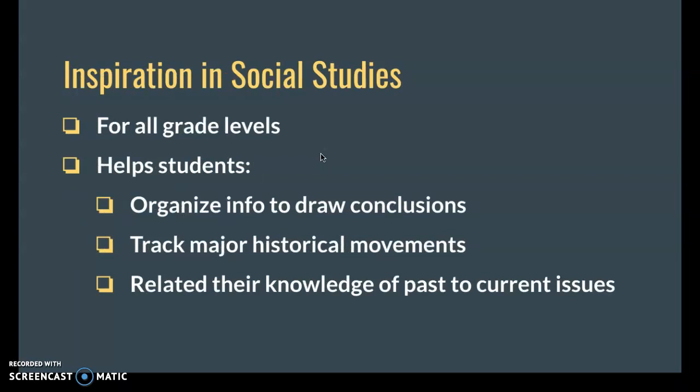Now, in social studies, you can use this for all different grade levels. For instance, maybe you're making a timeline — that's an example of a semantic map, a concept map. Structure of government, hierarchy of government — that's another example. Causes and effects of a war or a revolution, chronological order of events, historical persons, and historical ideas. Maybe you're speaking about economics and you want to track capitalism, socialism, communism, et cetera. Another nice thing is this allows students to go back and pull information from their previous experiences and tie them into current events.